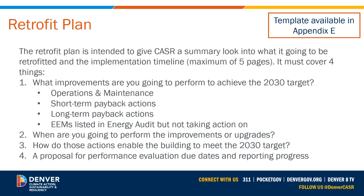Moving on to the retrofit plan — we've created a retrofit plan template that must be filled out and submitted with your timeline adjustment application. The Microsoft Word template can be found on the program website and in the technical guidance. The retrofit plan gives the city a high-level look into your compliance plans and should be a maximum of five pages. It must cover four items: first, the improvements you're going to perform to achieve the 2030 target, including operations and maintenance improvements, short-term and long-term actions, and reasons that some energy efficiency measures recommended in the audit were not included in the plan.